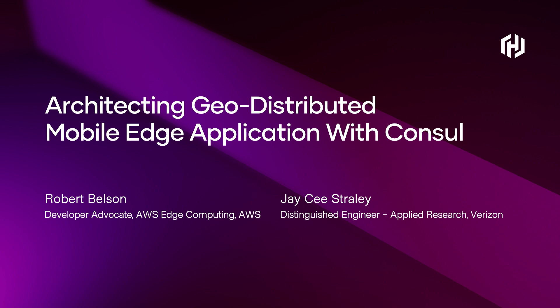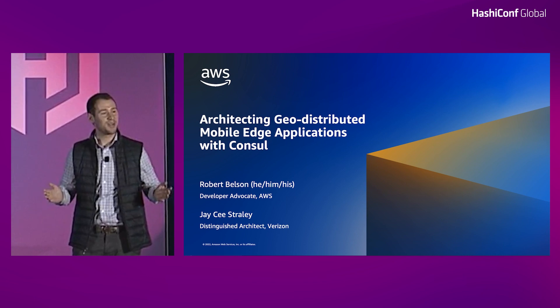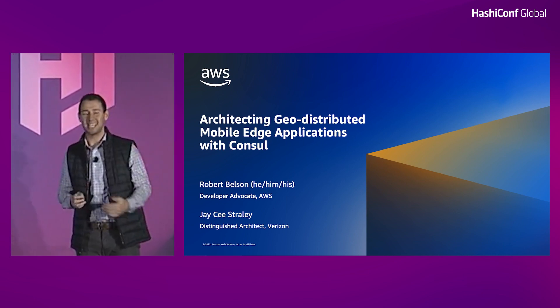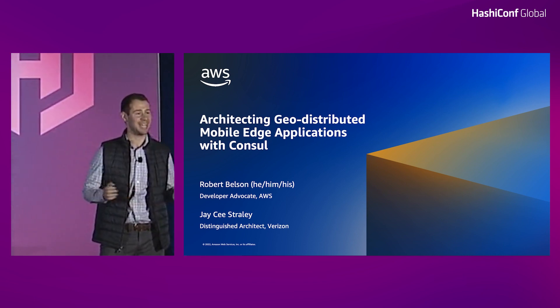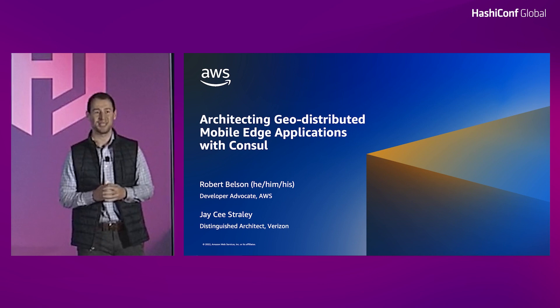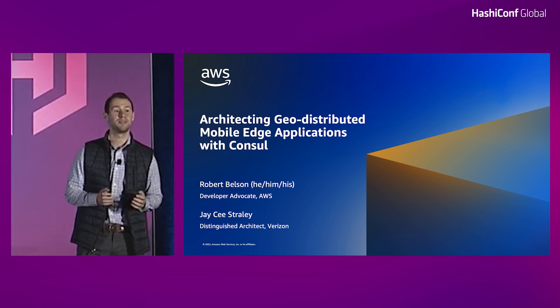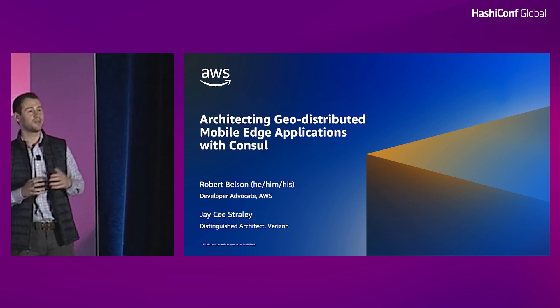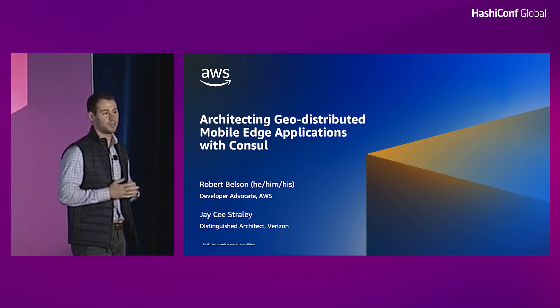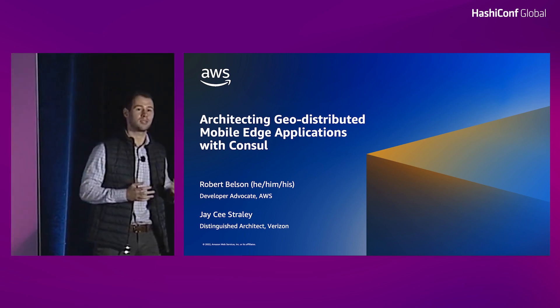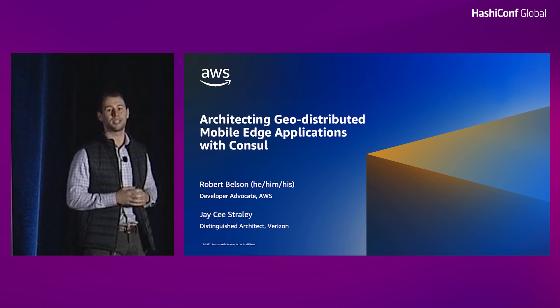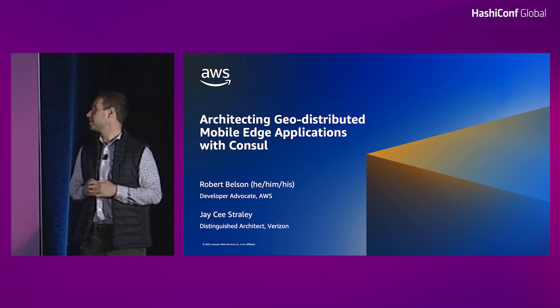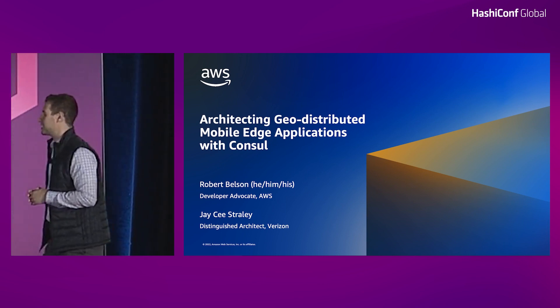Hey everyone, hope you had a great afternoon. Welcome to day two, afternoon two of HashiConf. It's great to be here. My name is Robby Bilson, I'm a developer advocate at AWS. I pretty much spend every waking moment thinking about our edge computing portfolio and how we can serve the needs of the developer community. And I'm joined here by none other than J.C. Straley from the Verizon team.